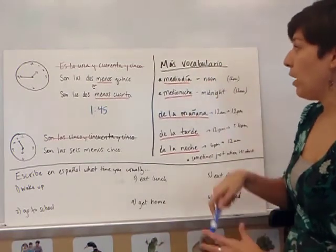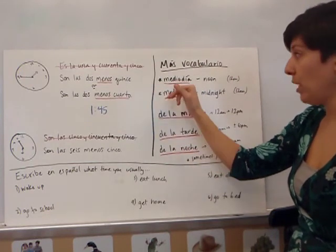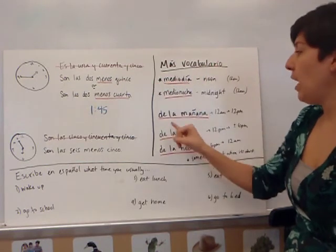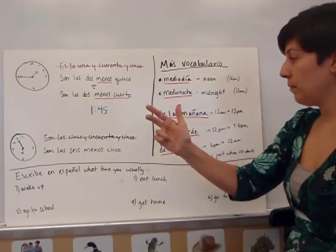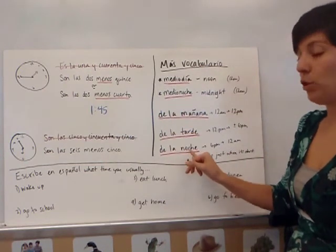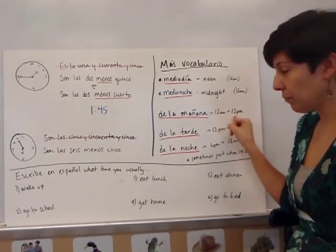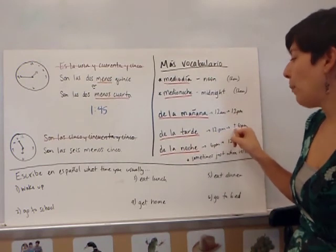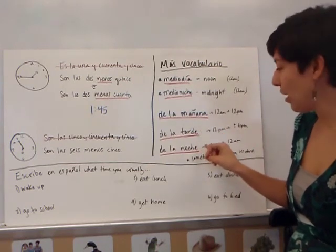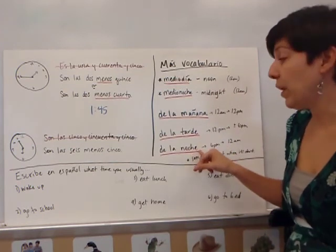Más vocabulario. Medio día — todos repiten — medio día. Medio día is noon. Here we have medianoche — medianoche — which is midnight. And then: de la mañana, de la tarde, de la tarde, and de la noche. De la mañana is literally 12 a.m. to 12 p.m. De la tarde is 12 p.m. to 6 p.m. Where de la tarde and de la noche meet usually depends on when it gets dark. La noche is considered when it's dark. Right now it's about five o'clock — I'd still go with de la tarde, but in about twenty minutes I'd probably switch to de la noche.